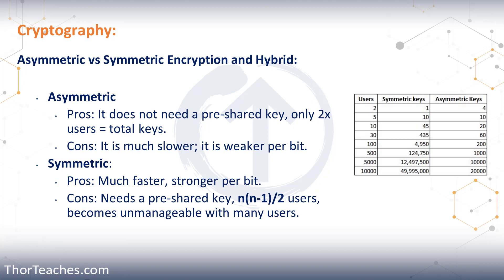Another key difference between symmetric and asymmetric encryption is that for each person or entity with asymmetric encryption, we need two keys. If we have 500 users, we need a thousand keys; if we have a million users, we need two million keys. Whereas with symmetric encryption, for each pair that needs to communicate you need one key — but for those same 500 people, they would need 124,750 keys.